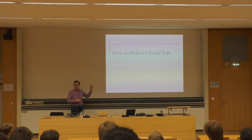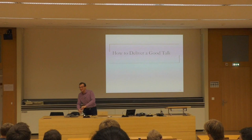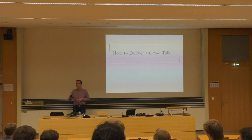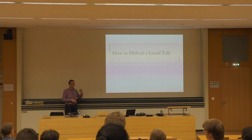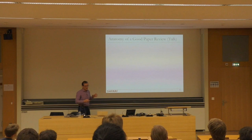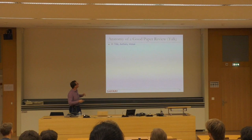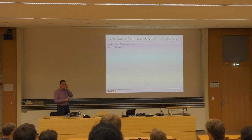Let's talk about how to deliver a good talk — the anatomy of a good paper talk or review. Whenever you're reviewing a paper, whether written or oral, the process is very similar. You need to have title, authors, and venue — a lot of people omit that, surprisingly. People need an idea of where this is published and who the authors are. It's really important to give credit to the authors. Then a summary: what is the problem the paper is trying to solve? What are the key ideas, key insights, key mechanisms? What is the implementation and the key results and conclusions?